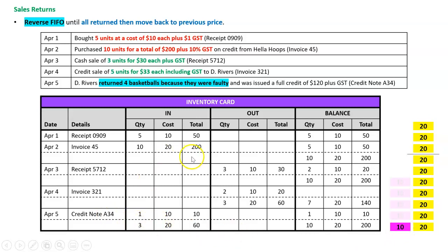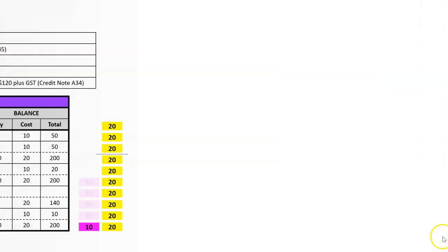When we record this in the inventory card it's an 'in' because it's a sales return coming back to us. April the 5th, credit note 834 — this is really important: even though they came back in reverse order, we put them in the original FIFO order. So I put the one at ten dollars on top and then the three at twenty. That brings me back to one at ten and ten at twenty in the balance.